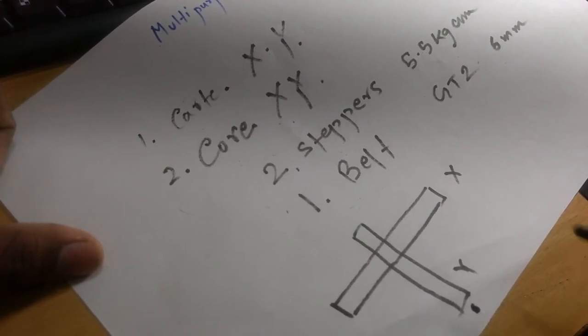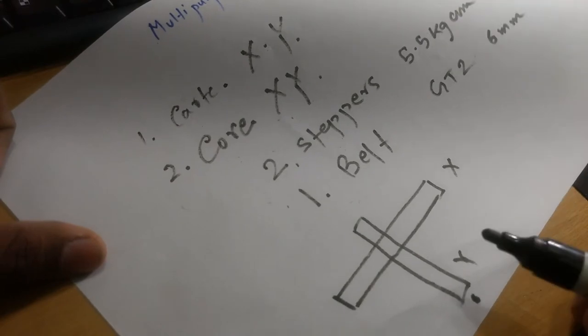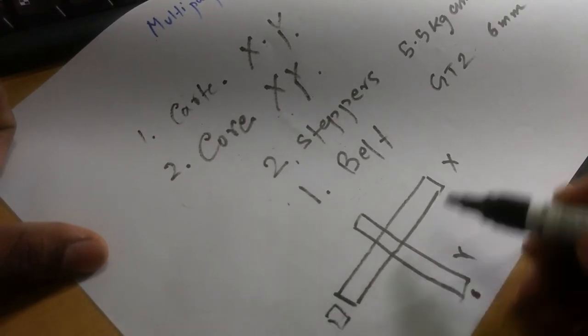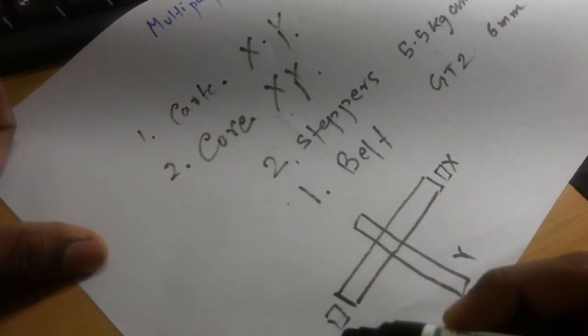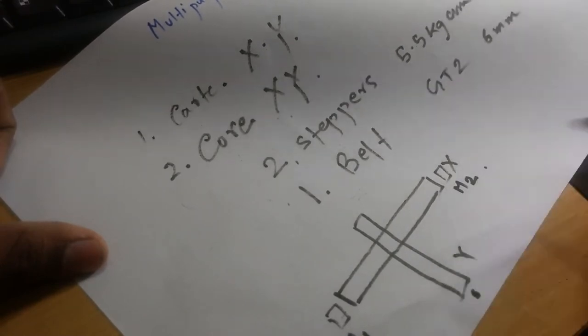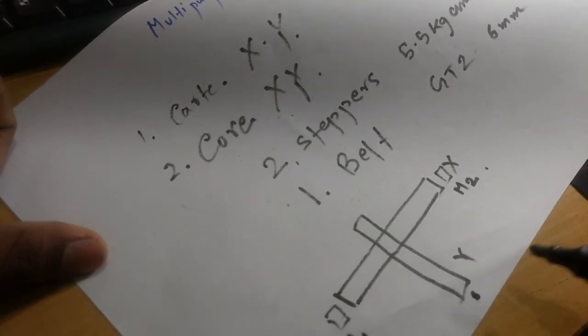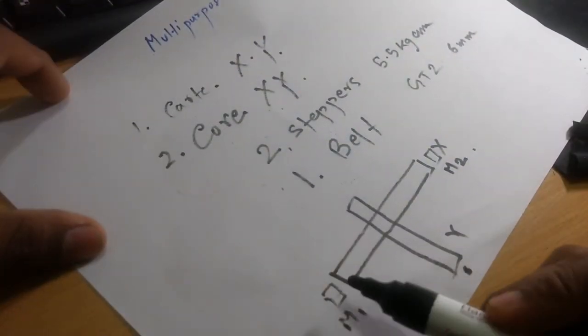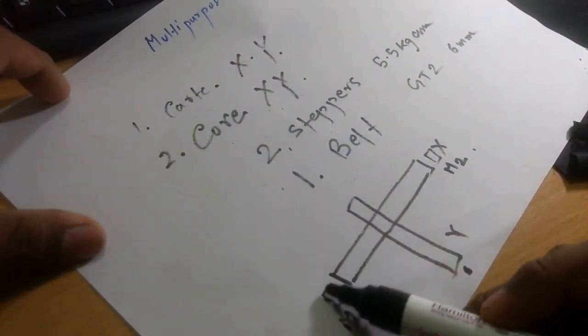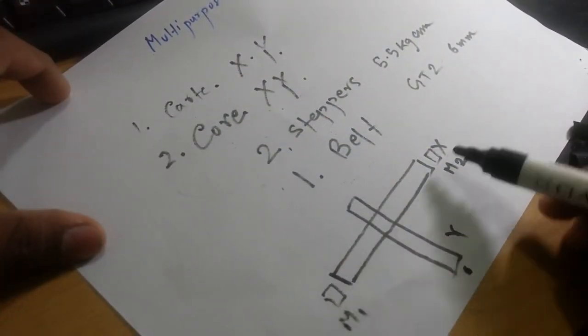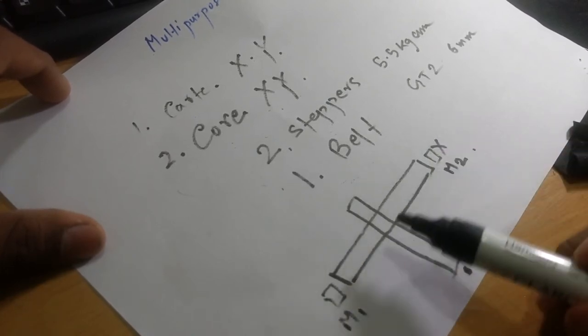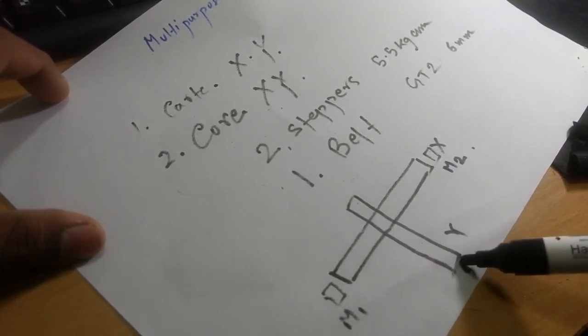So in this case, both the motors will be here—M1 and M2. So the weight, the motor weight, will only directly go to the base of the machine and there will be no weight on this Y axis.